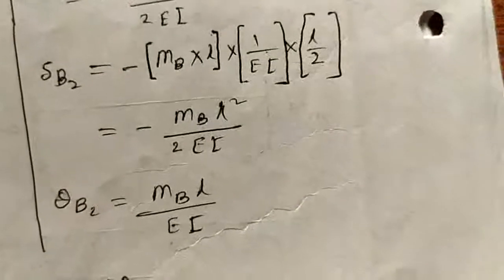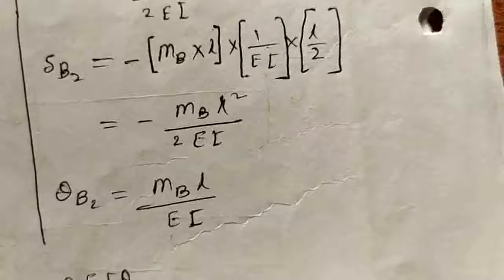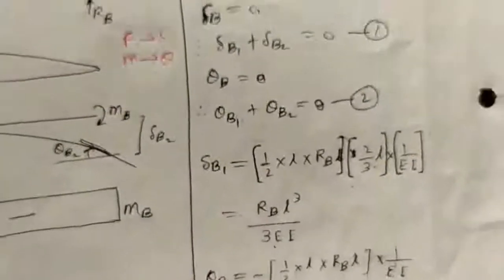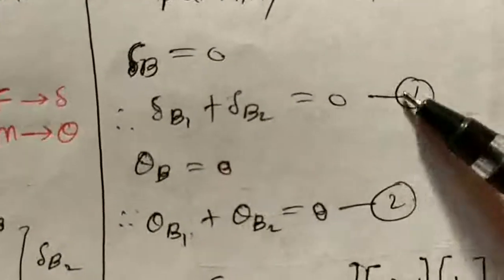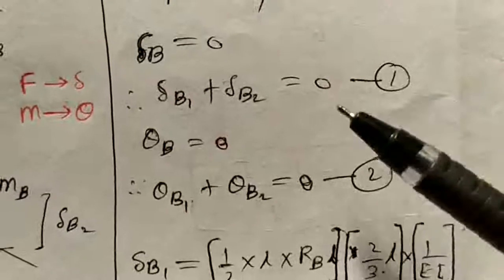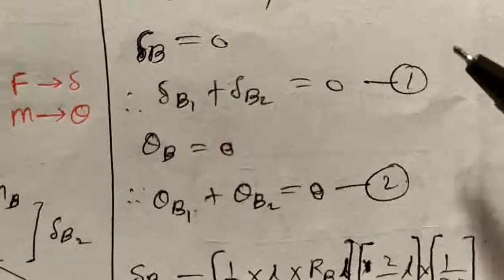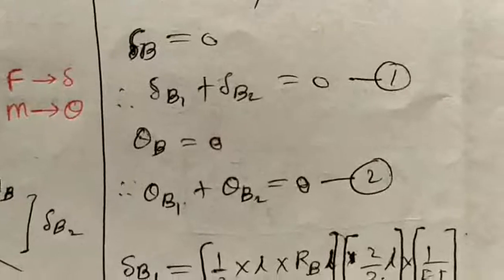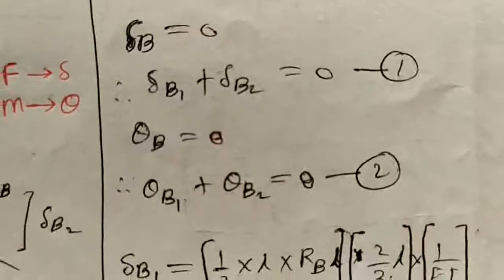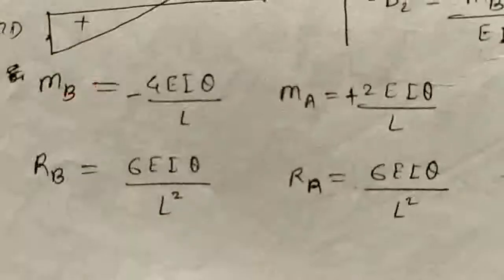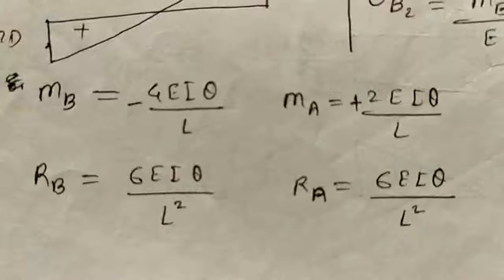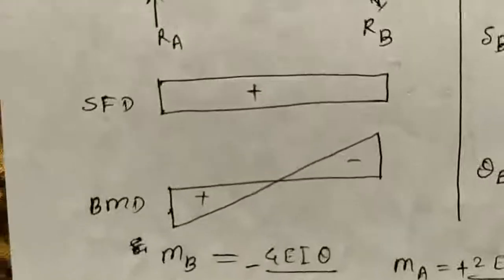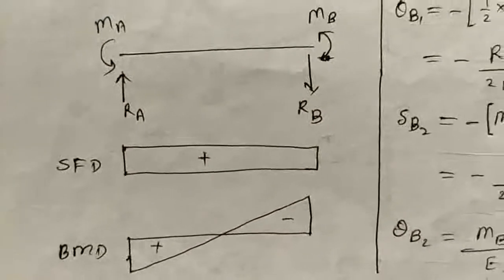Now we have all the values of delta and theta. We substitute these into the two compatibility equations. After solving the two equations simultaneously, we obtain the final bending moments MA and MB, as well as reactions RA and RB. This gives us the SFD and BMD.